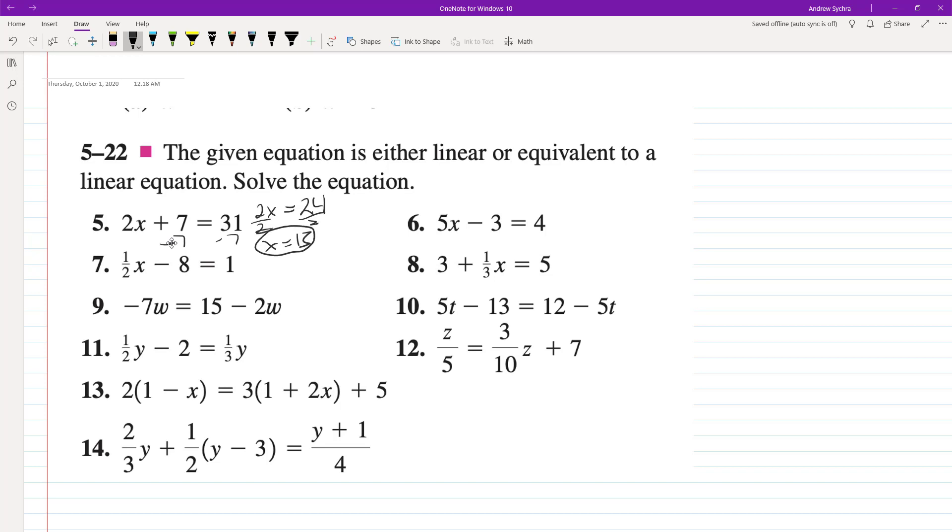So what about number 7? Add 8, multiply by 2, we end up with x is equal to 18. So if you plug 18 back in here, you get 18 times a half, which is 9 minus 8, equals 1.